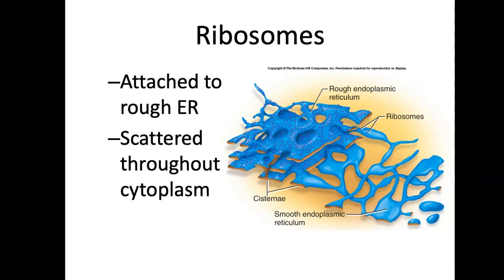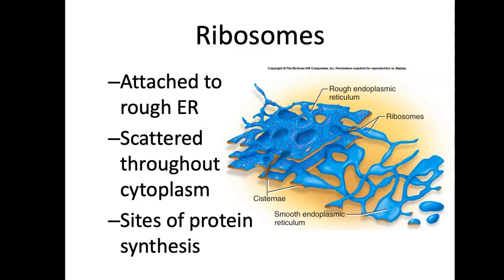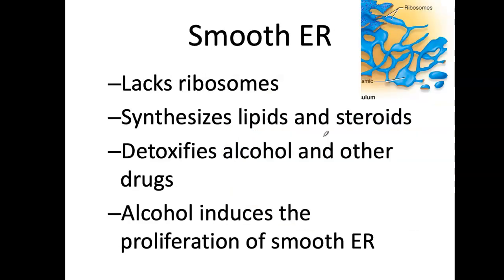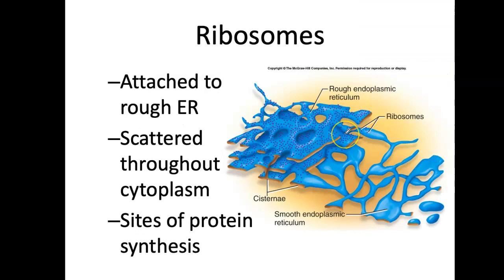What we always want to look at is the function of these organelles — what it is, what it looks like, and what the function is. The endoplasmic reticulum is scattered throughout the cytoplasm, and it is the location of protein synthesis. All proteins manufactured in your cell — which are hundreds and hundreds of proteins — are going to be manufactured here within the ribosomes, within the rough endoplasmic reticulum.